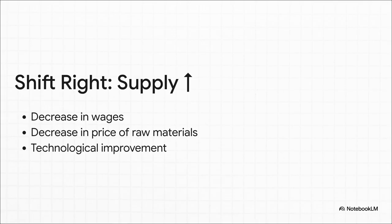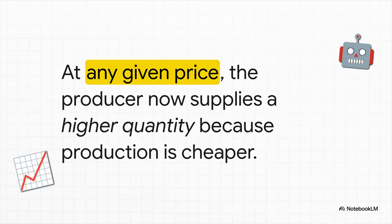On the flip side, what if something makes it cheaper to produce? Maybe raw materials get less expensive — but the big one, the real game changer, is technology. Think about a new harvesting machine that's way more efficient. That slashes your marginal costs all across the board. This kind of technological leap causes the entire supply curve to shift to the right, which represents a big increase in supply. Now at that same market price of $10, you're not just willing to sell 100 tomatoes — you're happy to sell way more because it's just gotten that much cheaper to produce them.